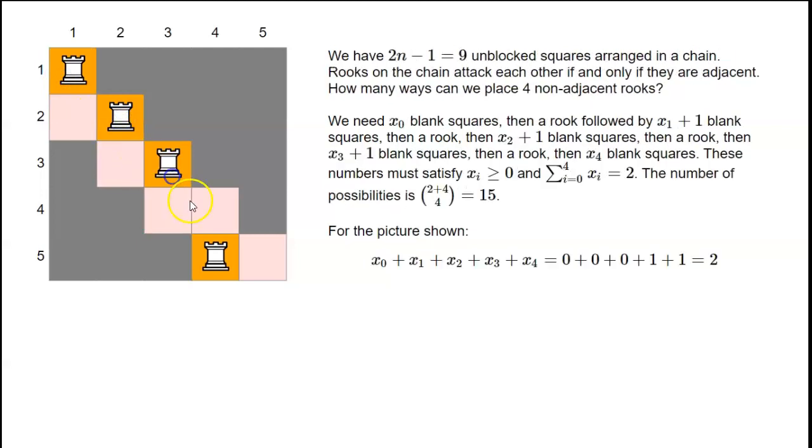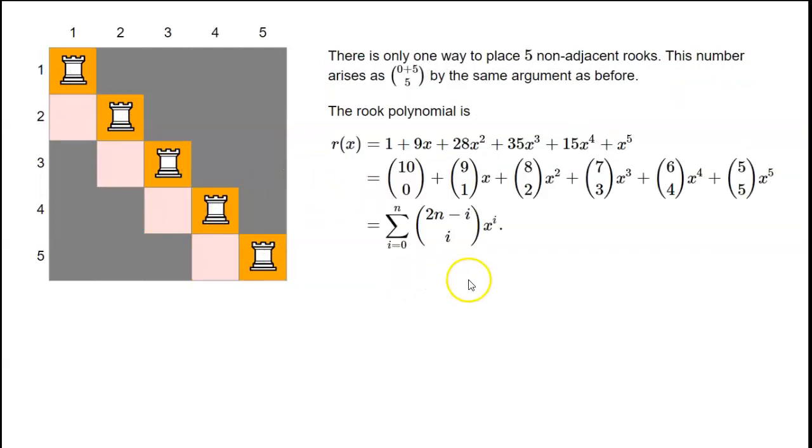This method enables us to calculate the full rook polynomial. In particular, if you want to place five non-adjacent rooks, then you need to have a single space between each of the rooks. This is the only possible way to do it. In general, if you want to place i rooks, the number of ways of placing i rooks is 2n minus i choose i by the method we've illustrated in several cases already.